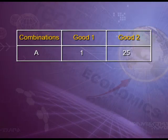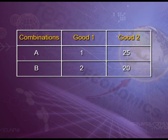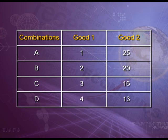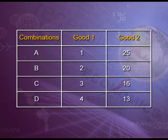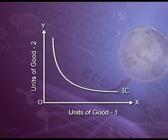Let us make a table for drawing an indifference curve. Suppose there are 4 combinations of 2 goods. Combination A: good 1 — 1 unit and good 2 — 25 units. Combination B: good 1 — 2 units and good 2 — 20 units. Combination C: good 1 — 3 units and good 2 — 16 units. Combination D: good 1 — 4 units and good 2 — 13 units. The consumer gets the same level of satisfaction whether he is given combination A (1 and 25) or combination D (4 and 13). The consumer is indifferent between all combinations. The line showing these combinations plotted on a diagram is known as the indifference curve.